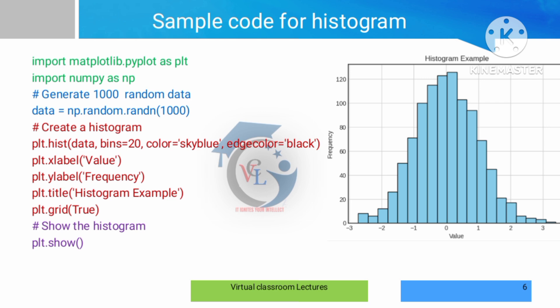You can add the number of bars and set the bar color — for example, blue — and the edge color as black. We then add the x-axis label as 'Values', the y-axis label as 'Frequency', and a histogram title. We also use plt.grid to add grid lines to the background of the graph, then call plt.show to display it.